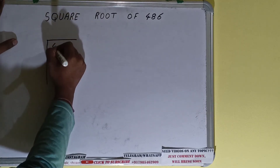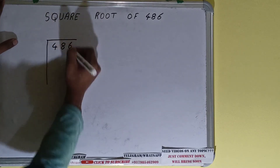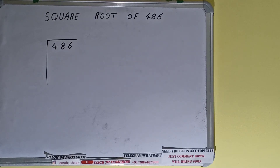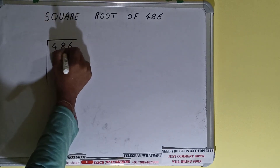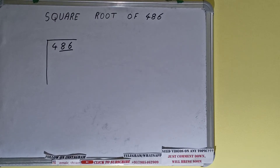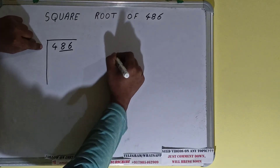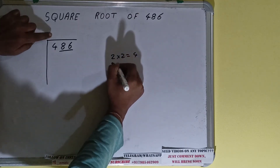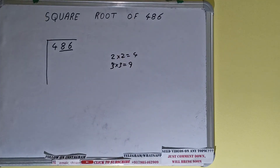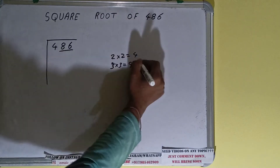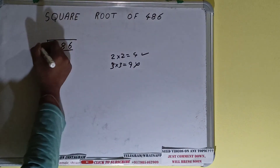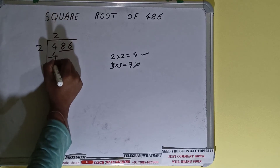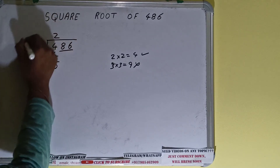First we write the number and form pairs from the right hand side. Only one pair can be formed and this four will be left out. We first divide this four. The rule is whatever number we write here we have to write here also. If we write two here and two here it gives four; if we write three here and three here it gives nine. We cannot use nine because it is greater than four, so we go with four. Two here and two here gives four, subtract and zero is left.